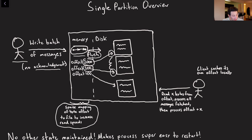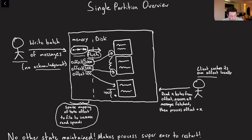On the consumer side, we basically cache our own offset that we last read from Kafka within a certain topic and a certain partition locally. We'll take an offset that we want to read — maybe we want to start from 100, maybe we read 100 bytes — and then the next time we're going to read from offset 200. We can cache all of this information locally, which means that this Kafka broker is effectively completely stateless, and we can restart it as needed.